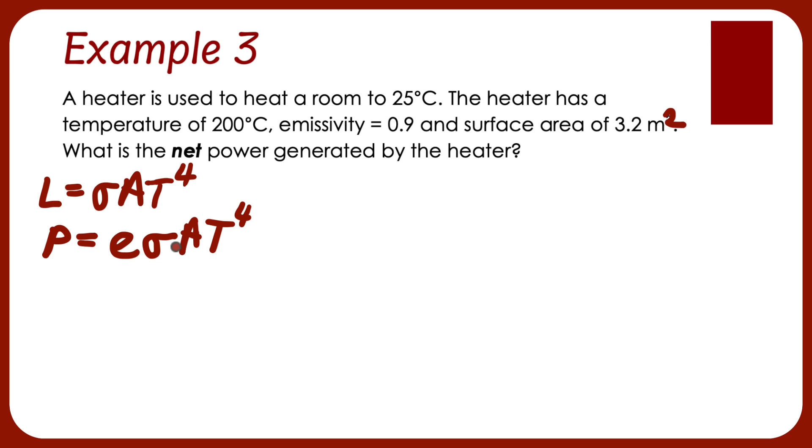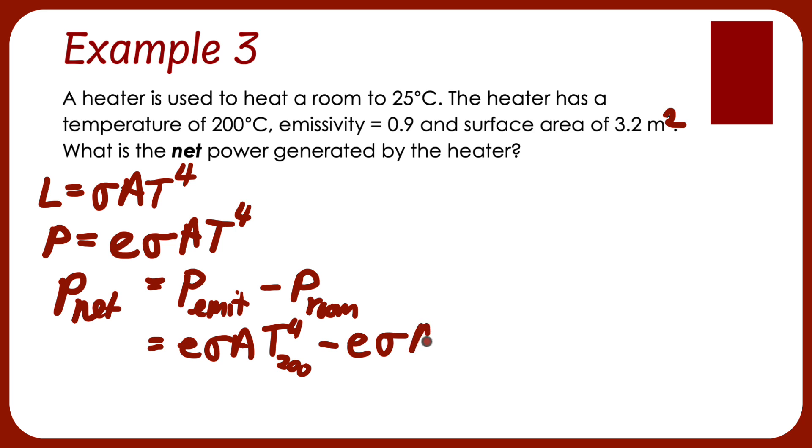So my net power will be the emitted power of the heater minus what it absorbs. It's going to absorb the power because of the temperature of the room. So this is the power that's landing on it, and this is what it's going to give off. If I talk about the emission, that's going to be E sigma, its area, and the temperature here is going to be 200. Here's what it's going to absorb. Because remember, it's not a black body. And then this is going to be my room temperature.